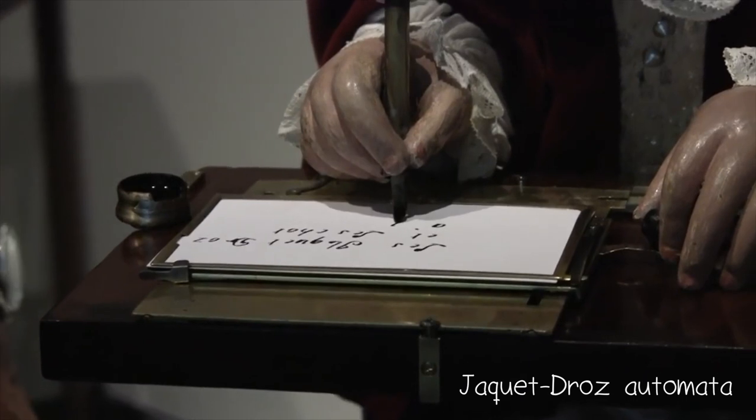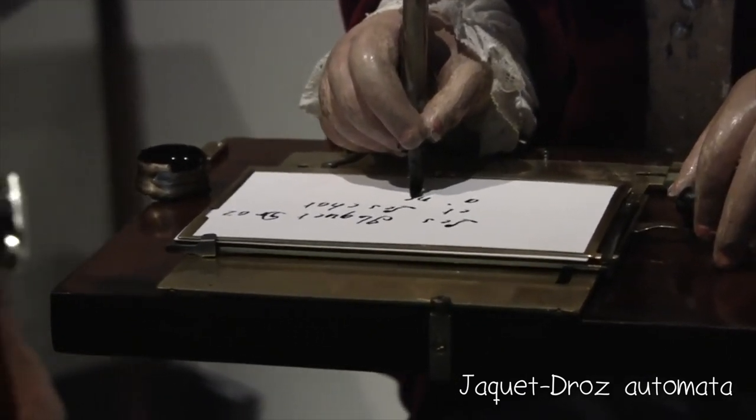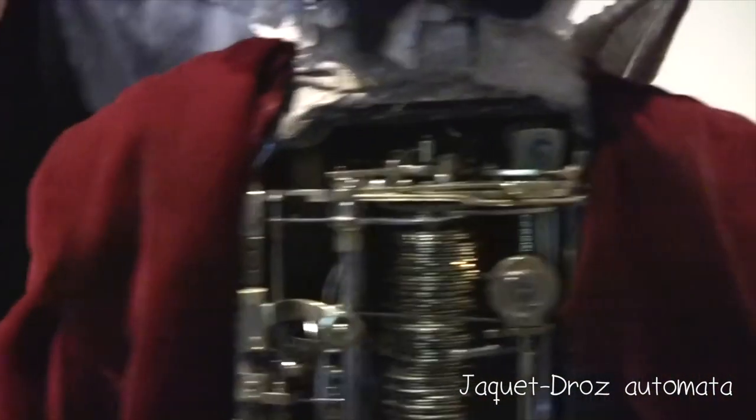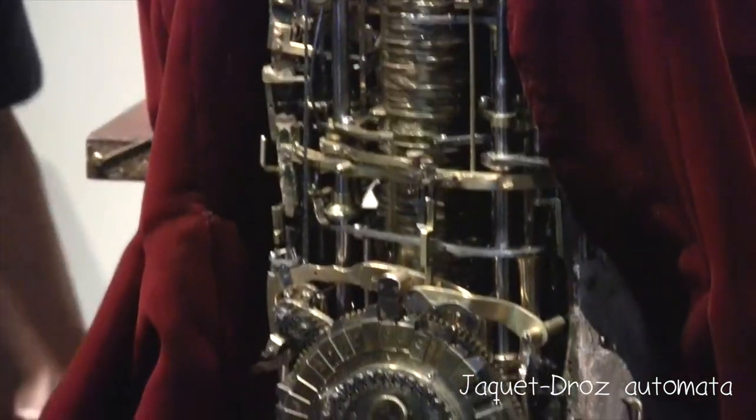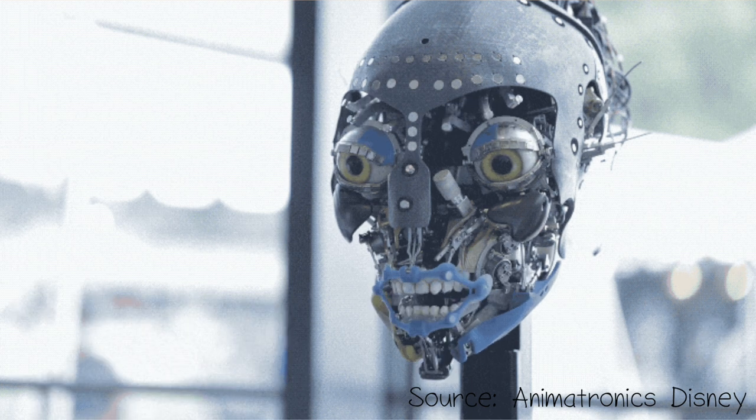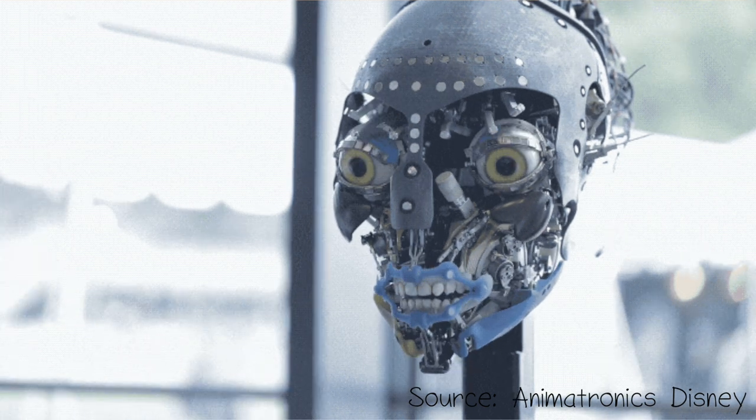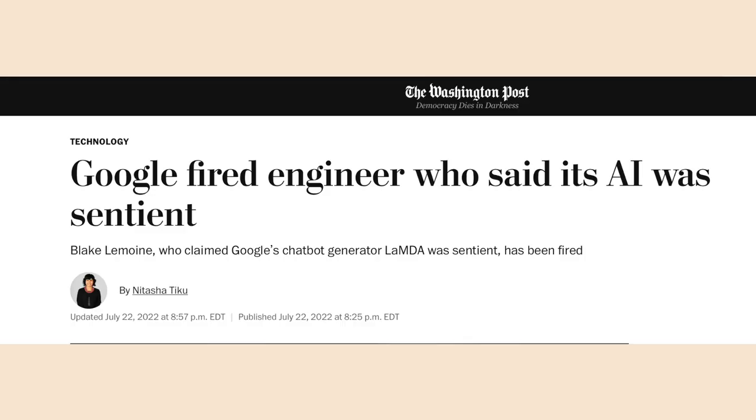This French writing automata from 1773 is not conscious. But I would not blame someone for believing it was for being able to write in an age where less than half of the population could read. Today, we have robots that mimic every muscle in our face with powerful language processing systems behind them. And we can easily get tricked into believing that these machines are conscious.